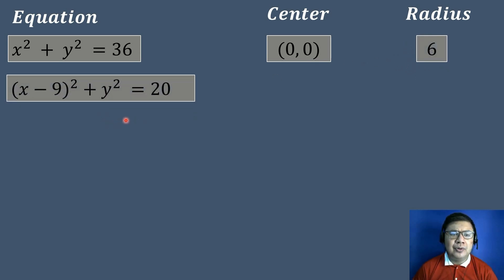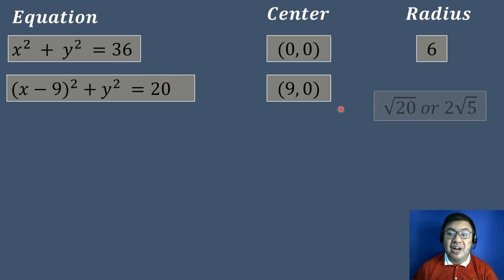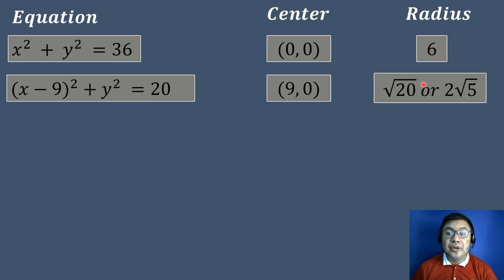Next example: the quantity of x minus 9 to the second power plus y squared equals 20. To get the center, the value of h is negative 9, so we change the sign to get positive 9. Since there is no value of k, k equals 0. The center is at coordinates (9, 0). To get the radius, we check if 20 is a perfect square. Since it is not, we take the square root of 20, which simplifies to 2 square root of 5.